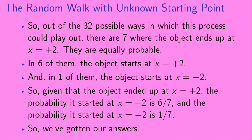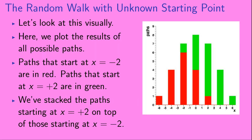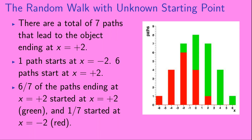Let's look at this visually. Here we plot the results of all possible paths. Paths that start at x equals minus 2 are in red; paths that start at x equals plus 2 are in green. We've stacked the paths starting at x equals plus 2 on top of those starting at x equals minus 2. There are a total of seven paths that lead to the object ending up at x equals plus 2 — one path starts at x equals minus 2, and six paths start at x equals plus 2. So six sevenths of the paths ending at x equals plus 2 started at x equals plus 2 (shown in green), and one seventh started at x equals minus 2 (shown in red).